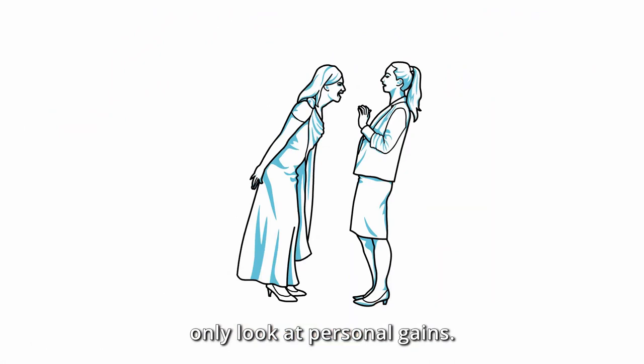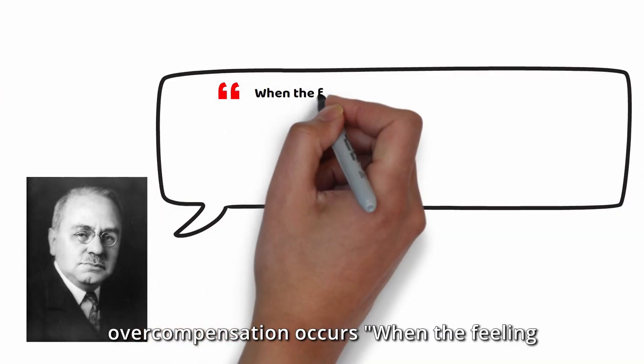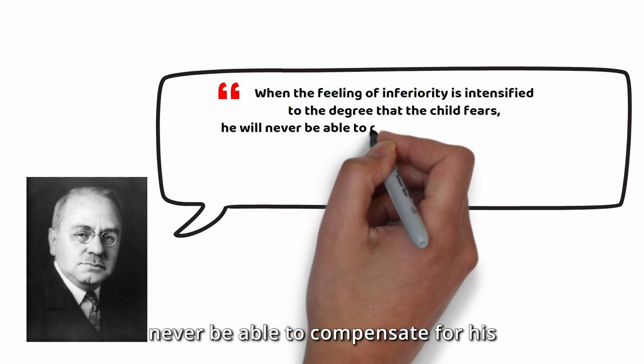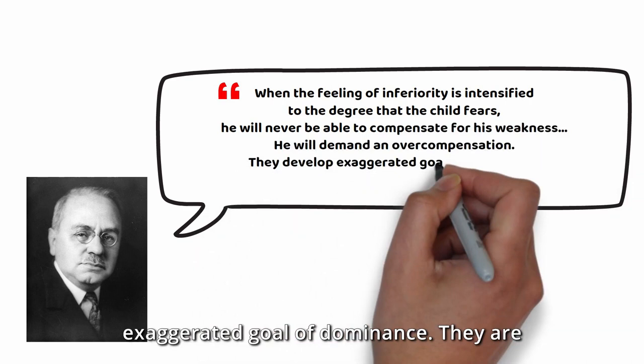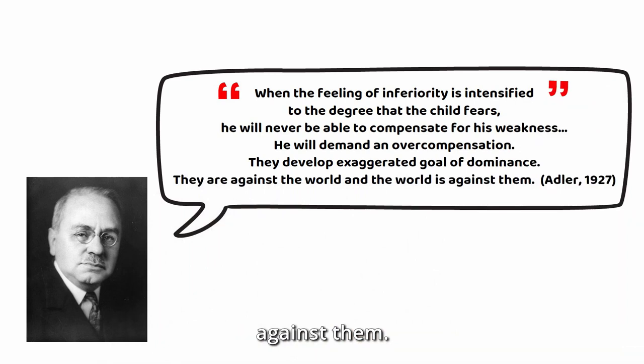They try to dominate other people and only look at personal gains. According to Alfred Adler, overcompensation occurs when the feeling of inferiority is intensified to the degree that the child fears he will never be able to compensate for his weakness. He will demand an overcompensation. They develop exaggerated goal of dominance. They are against the world and the world is against them.